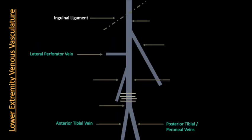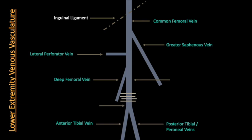The lower extremity vascular structure of interest to our DVT exam is sketched out here. The common endpoint for venous return of the lower extremity is the iliac vein, which joins with its contralateral partner to form the inferior vena cava. The iliac vein is an extension of the common femoral vein, identified below the inguinal ligament in the proximal thigh. A large tributary is the greater saphenous vein, which joins the common femoral vein proximally. Tracing distally, we may see a lateral perforator vein and then the deep femoral vein, which branches close to the femur and joins the femoral vein — sometimes called the superficial femoral vein, which is a common naming issue.